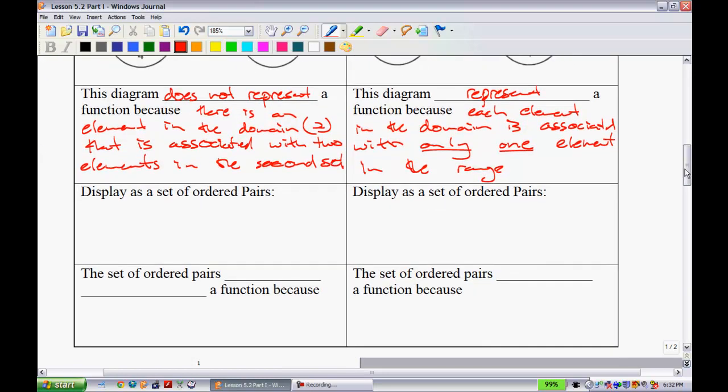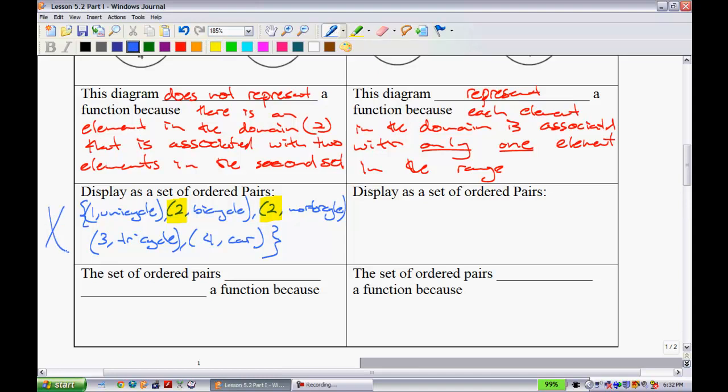Next thing they want us to do is display as a set of ordered pairs. We would use our braces to start there. We would say one goes onto the unicycle. Two belongs to the bicycle. Two belongs to the motorcycle. Three belongs to the tricycle. And lastly, four belongs to the car. Now the part that I want to highlight right here is the fact that whenever you see two of these same things, the two, essentially your x values that are the same in a set of ordered pairs, that tells you that you do not have a function.